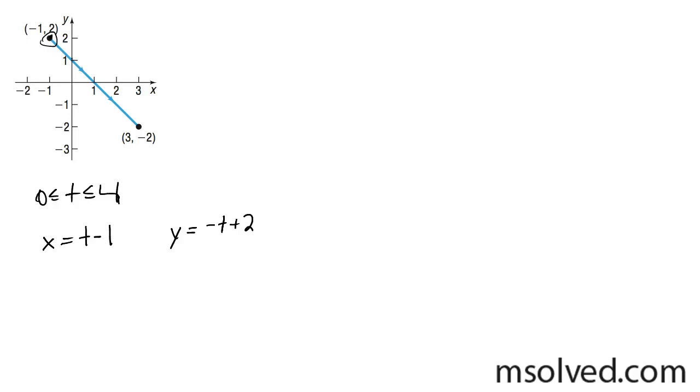At 1, negative 1 plus 2 is 1, and then it heads down linearly. So that's it. Those are your two equations, and that's your domain that you go on.